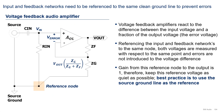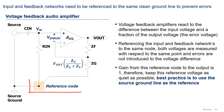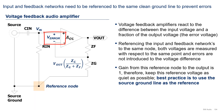Let's now discuss the reference node for the feedback network. The circuit shown on the left is a typical configuration of the voltage feedback audio amplifier with a simplified input filter. To prevent introducing errors, the reference node of the input network and the gain network need to be the same. As we saw in the previous videos, the amplifier reacts to the error voltage, which is the difference between the input voltage and a fraction of the output voltage. Therefore, these voltages need to be measured with respect to the same node to not introduce unwanted errors to their difference. Finally, the gain from the reference node to the output is 1, so we need to keep this reference node as quiet as possible.